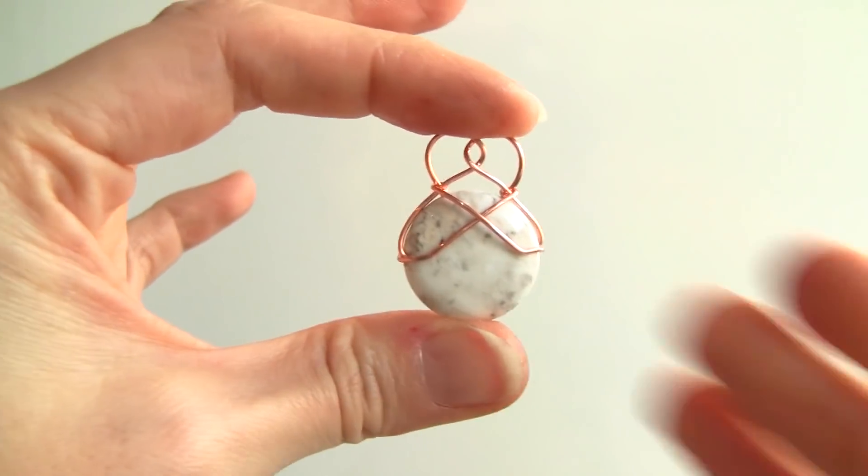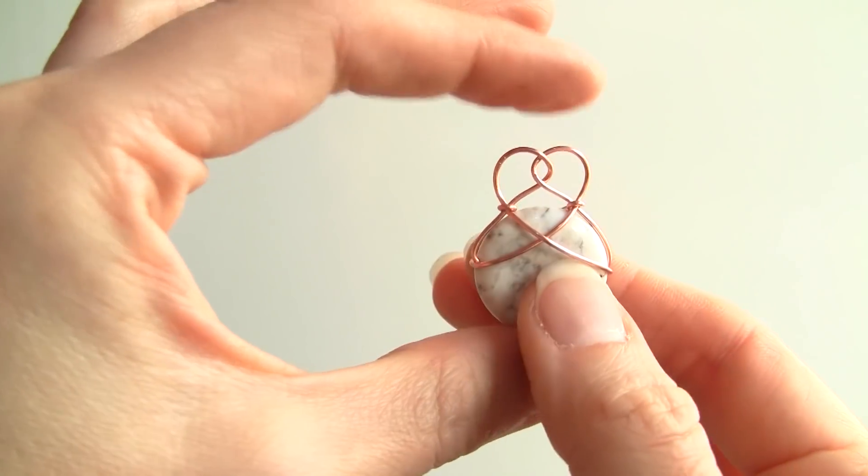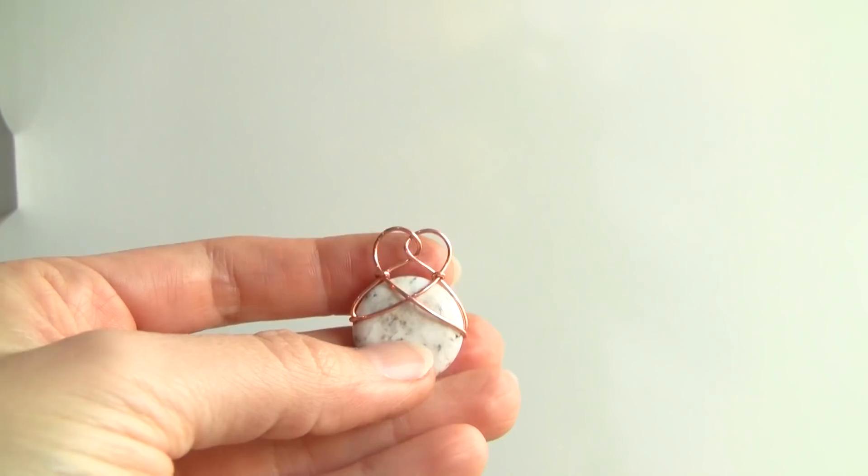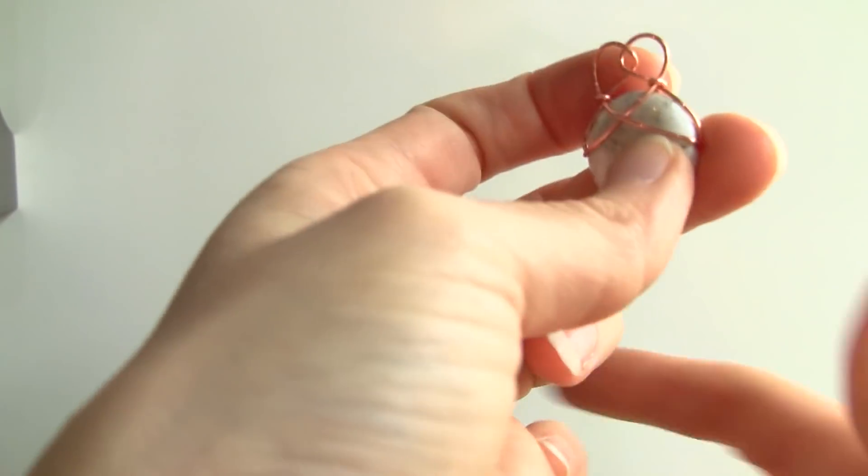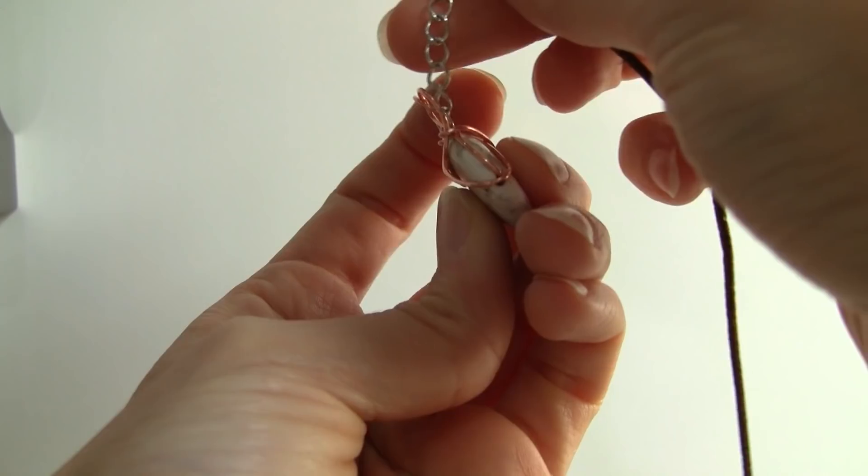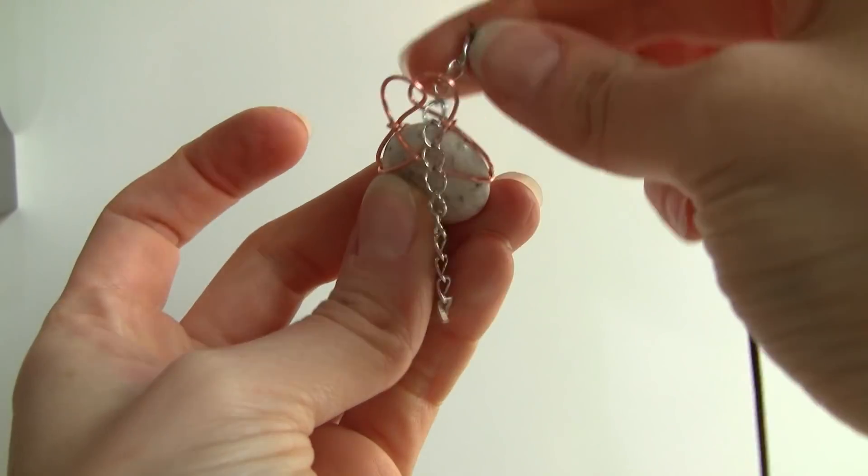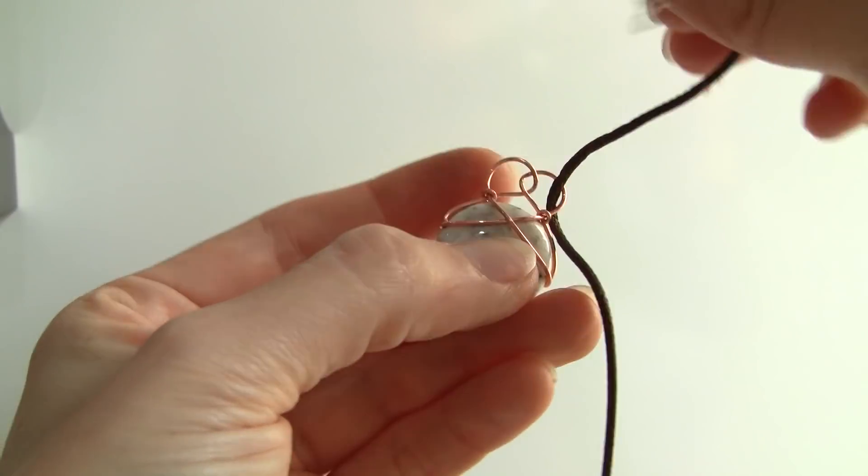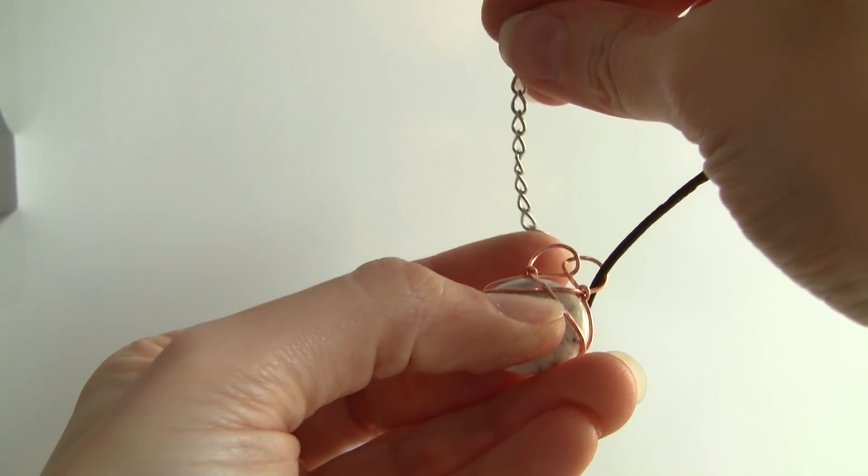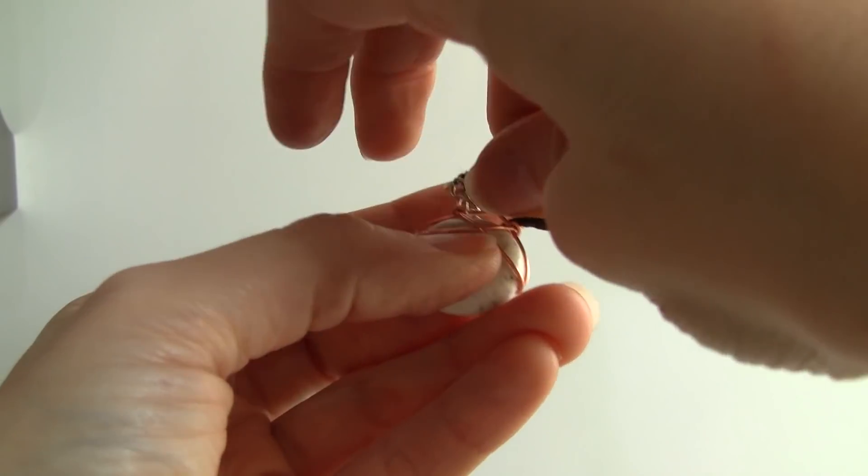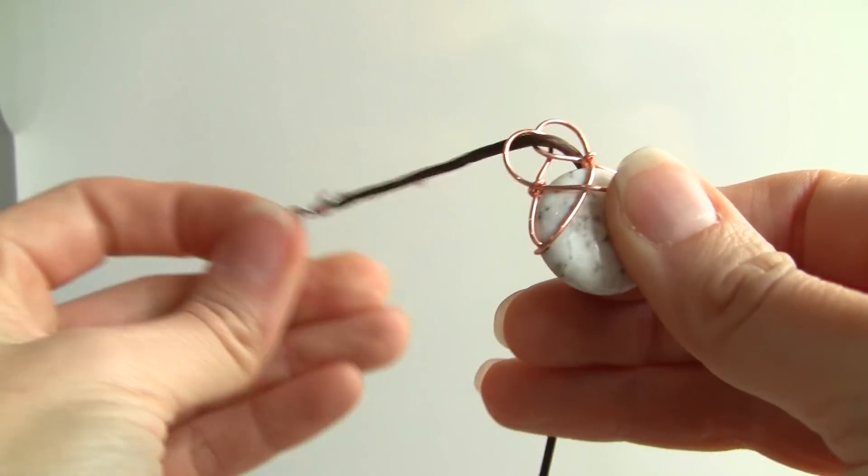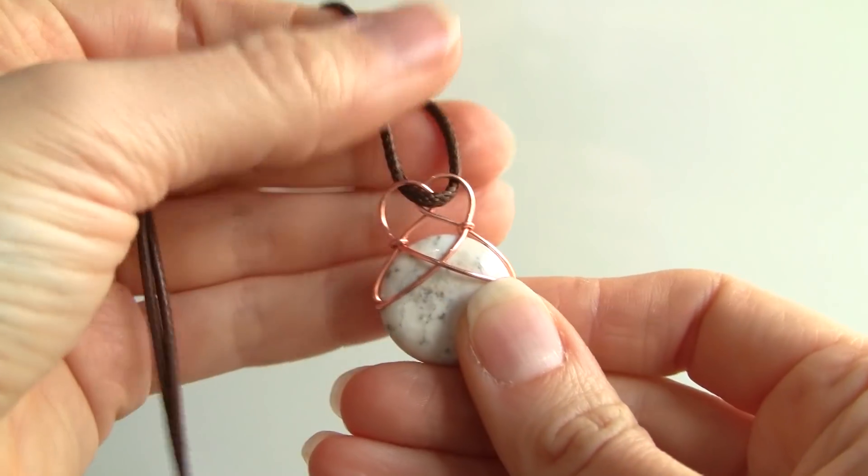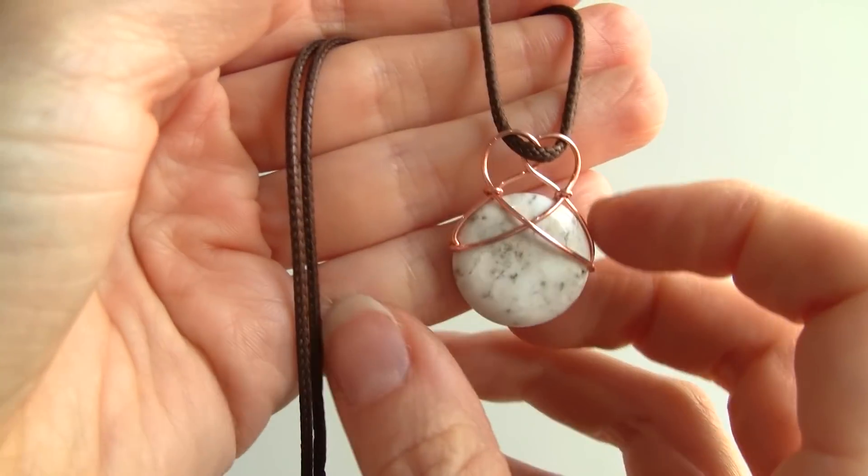So now we have side one and side two. And the way in which you would wear this is you would take your chain or your cord, you would put it through one half of the heart and then put it through the other half like this. So this is how it is worn.